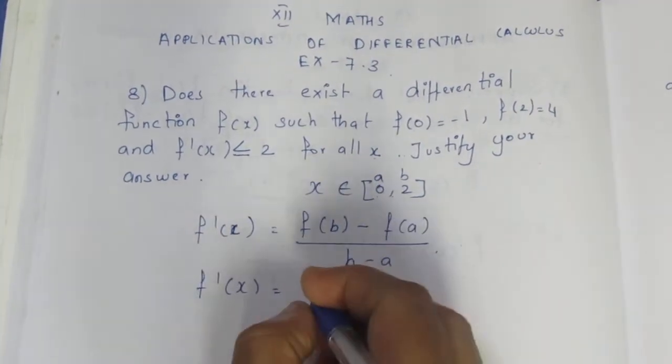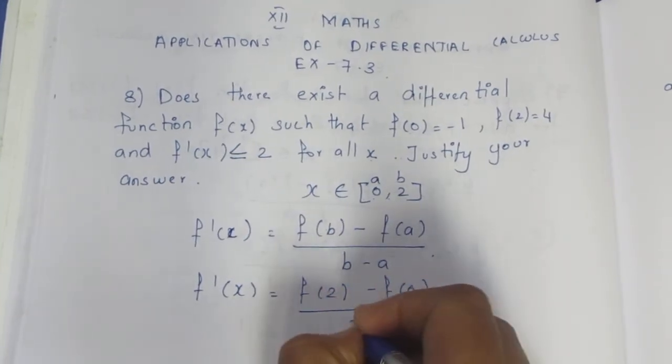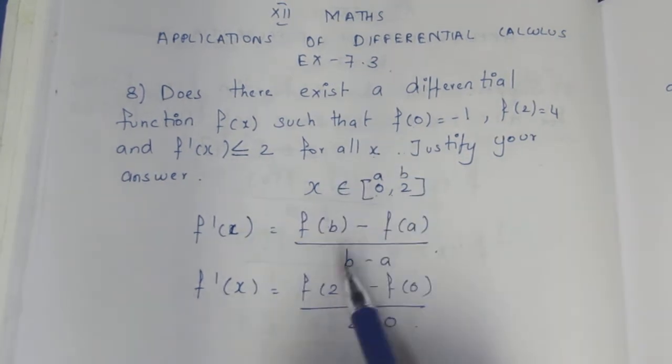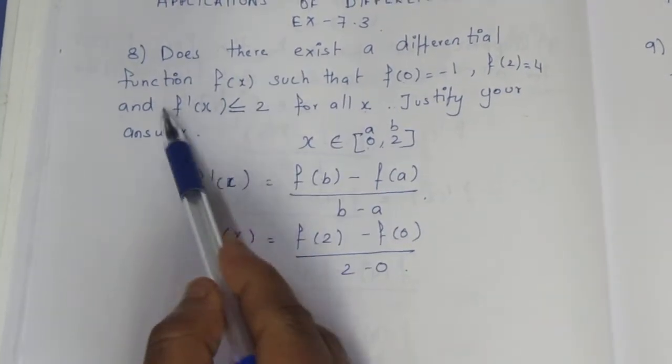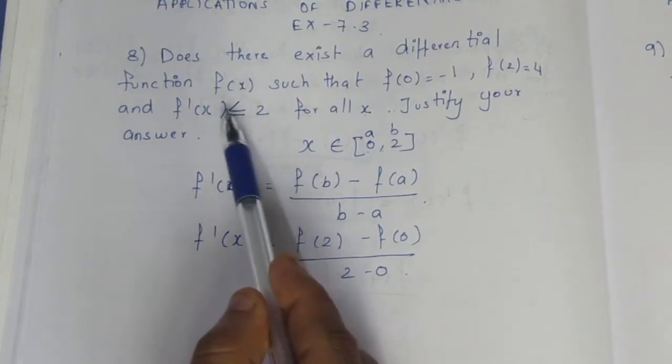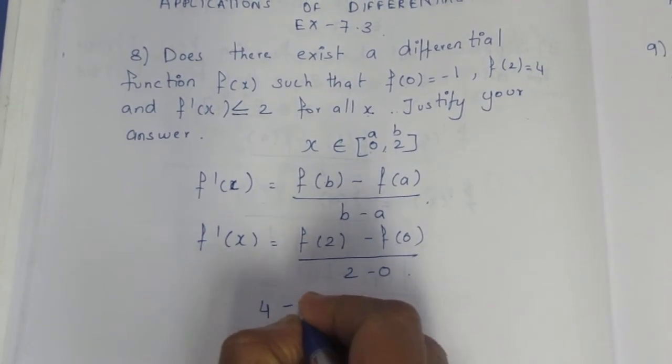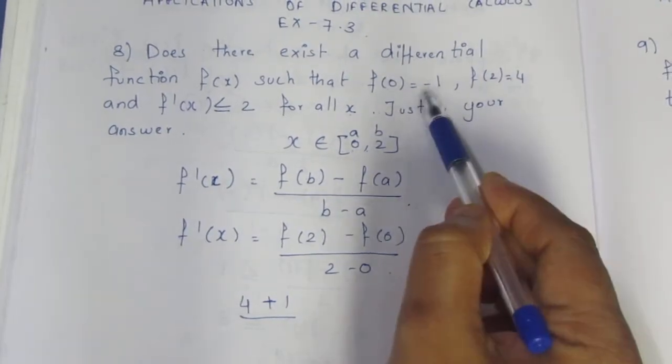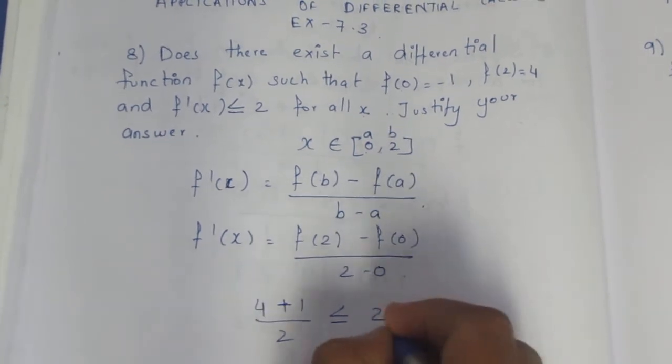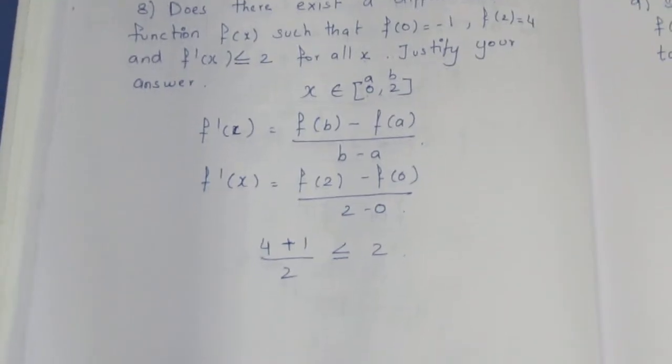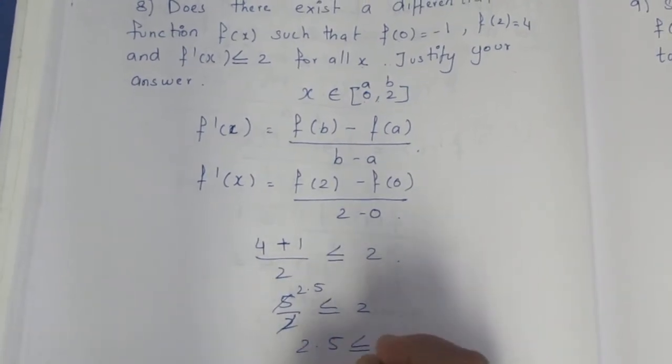f'(x) ≤ 2, so [f(b) - f(a)] / (b - a) ≤ 2. We substitute values: [4 - (-1)] / (2 - 0) = [4 + 1] / 2 = 5/2 ≤ 2. So 2.5 ≤ 2, which is false.